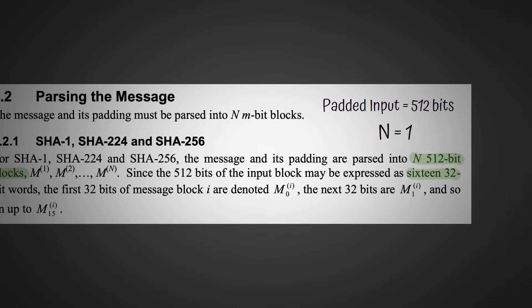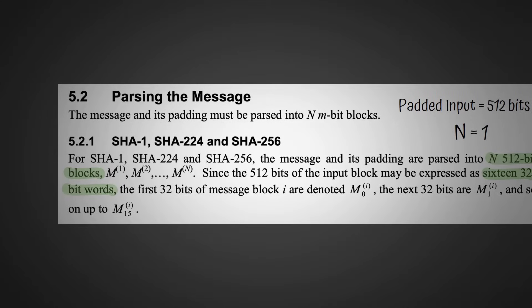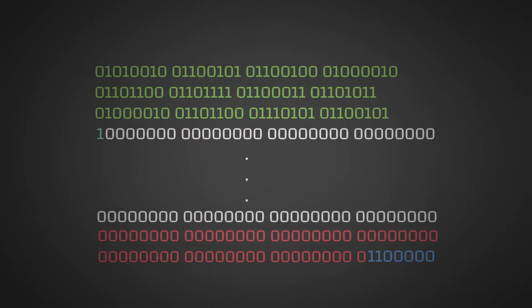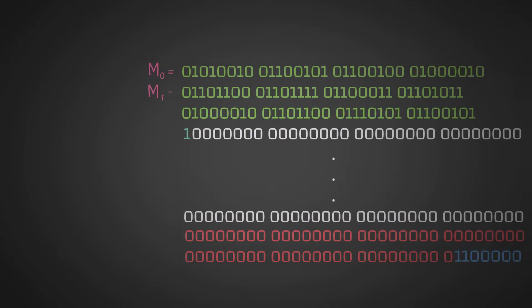All we have to do now is split the 512-bit block input into 16 32-bit words. Luckily, we've already organized our bits into this format where each row represents 32 bits, so we can just label each row M0 to M15. These are our 16 32-bit words.